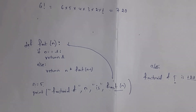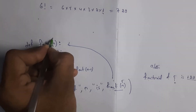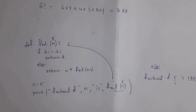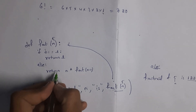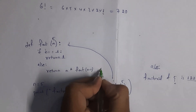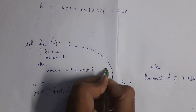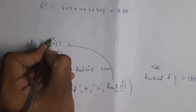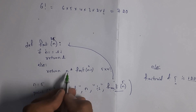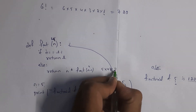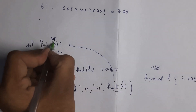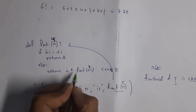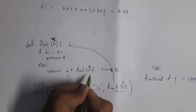I will explain how this program works. n contains value 5. Since 5 is not equal to 1, it skips the if part and executes the else part: return 5 * fact(4). This function calls itself, so it repeats. Now n is 4, which is not equal to 1, so else returns 4 * fact(3). Then n is 3, not equal to 1, so else returns 3 * fact(2).